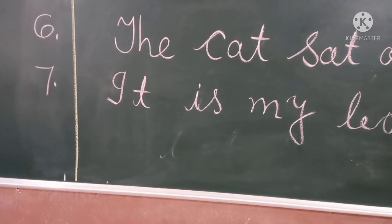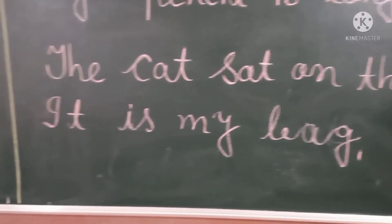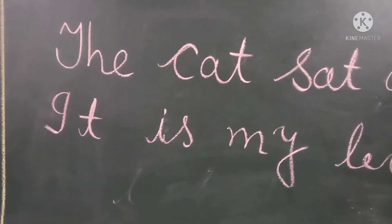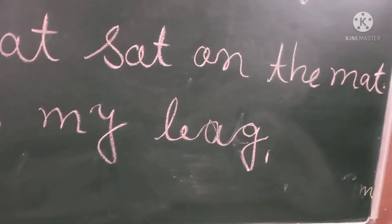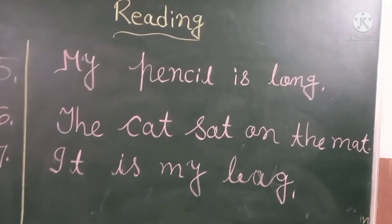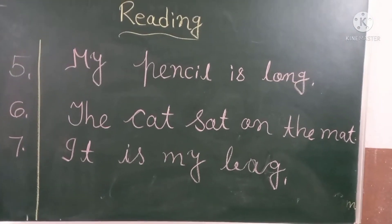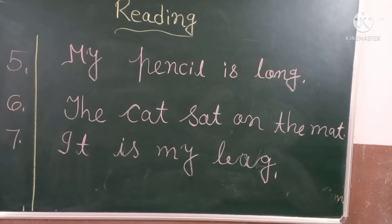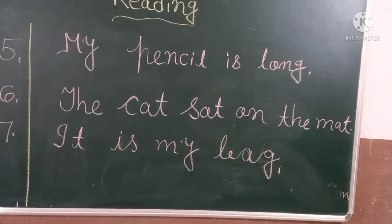Then number seven: it is my bag. Here also you can see I have written 'I' in capital and at the end of the sentence I have given one full stop. That's all for today. Practice reading at home — whenever you want to read small sentences, you can write and read like this. Bye everybody!